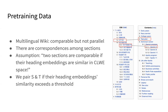The problem then becomes how to acquire quality comparable documents in considerable amounts, and that's where multilingual wiki comes in. Note that multilingual wiki is a comparable resource, but not a parallel resource. Different language versions of the same wiki entity are not direct translations of each other, and may not even share the same structure. However, there are correspondences among sections. We make an assumption that two sections are comparable if their heading embeddings are similar in the cross-lingual word embedding space, and we pair two sections if their heading embedding similarity exceeds a predefined threshold.